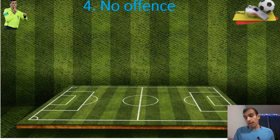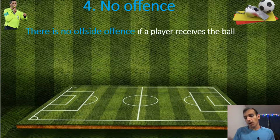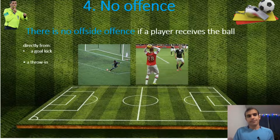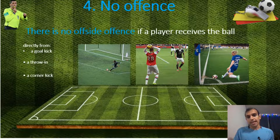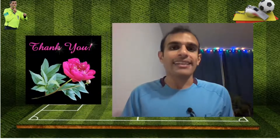Number four: no offense. There is no offside offense if a player receives the ball directly from a goal kick, a throw-in, or a corner kick. So there is no offside for goal kicks, throw-ins, and corner kicks.